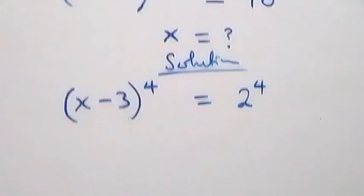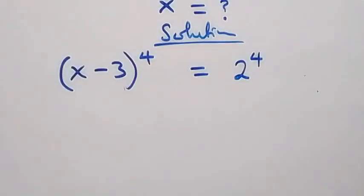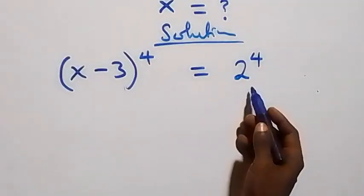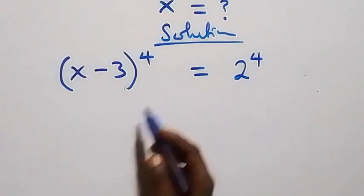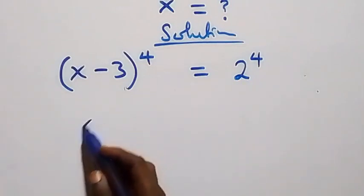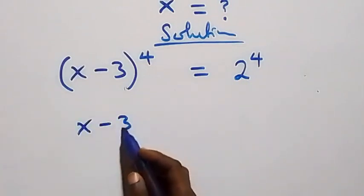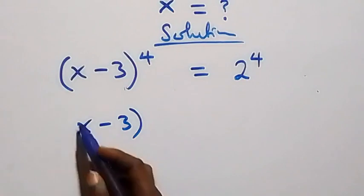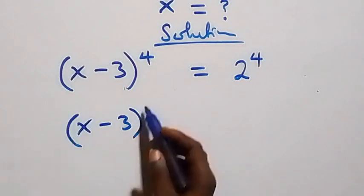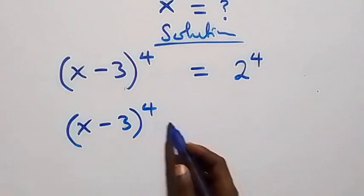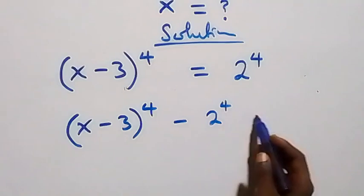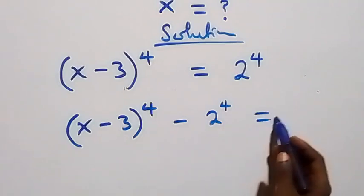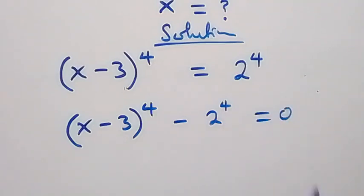That is 2 multiplied by itself 4 times. The next step: let's take 2 raised to power 4 to the left-hand side, and we have (x minus 3) raised to power 4, then minus 2 raised to power 4, equals 0.